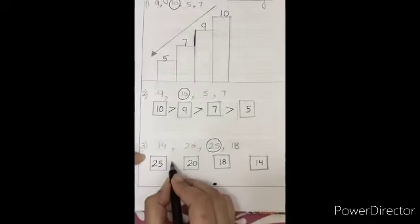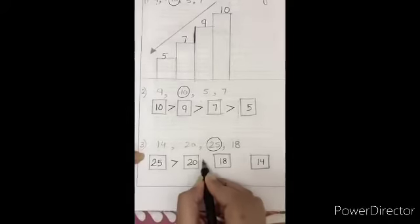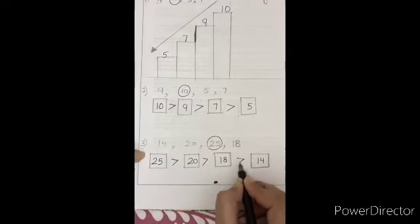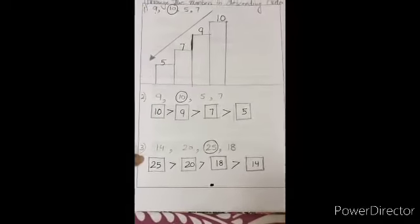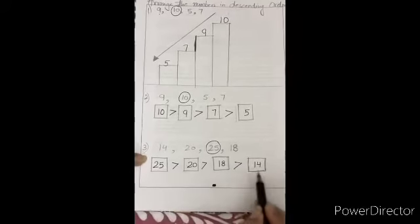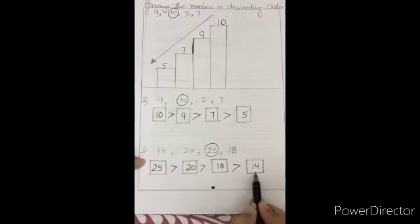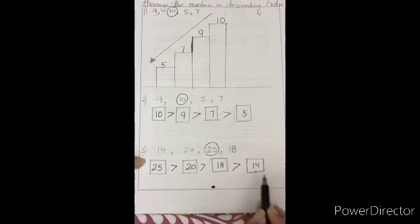Again, in the middle, we are going to put the sign that is greater than. See, in this way, we arrange the number in descending order from bigger to smaller. I hope you understood this concept of descending order. Thank you.